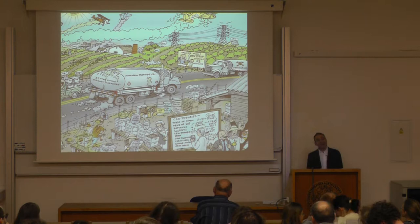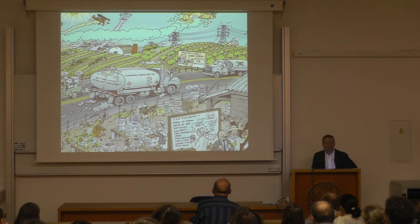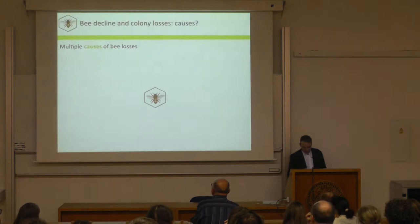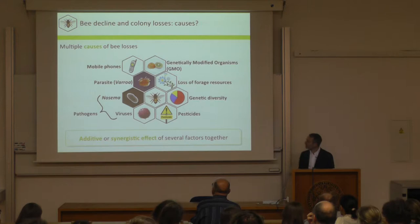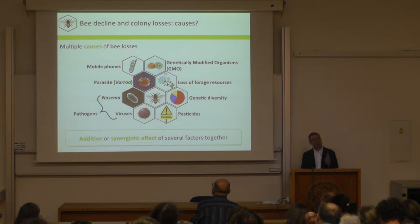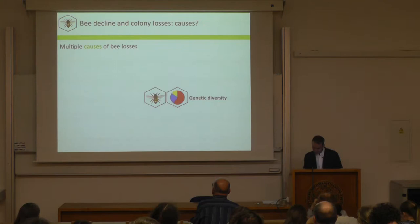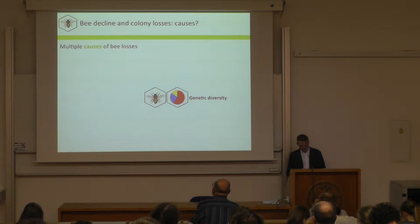There have been multiple suggestions for why bee numbers have declined. Post-2006–2007, an image emerged suggesting a whole multitude of reasons — pesticides, intensive land use, mites, and more — all suggested to have caused bee decline. I'm going to focus in this lecture on just two: genetics and diseases.